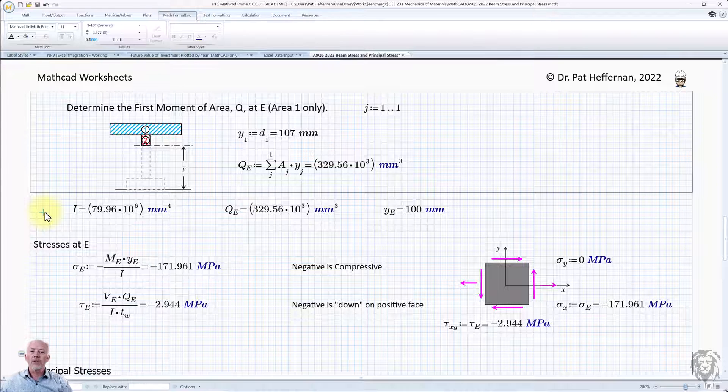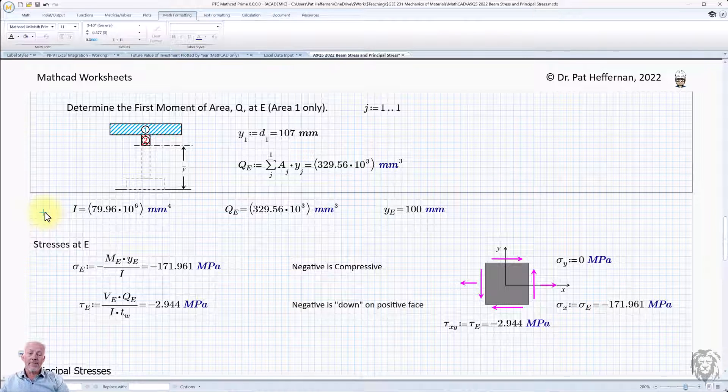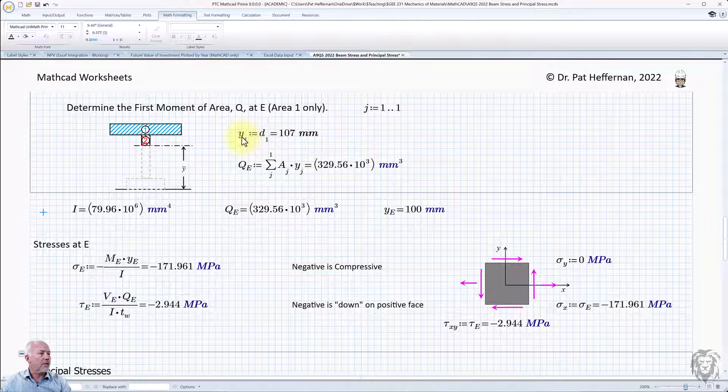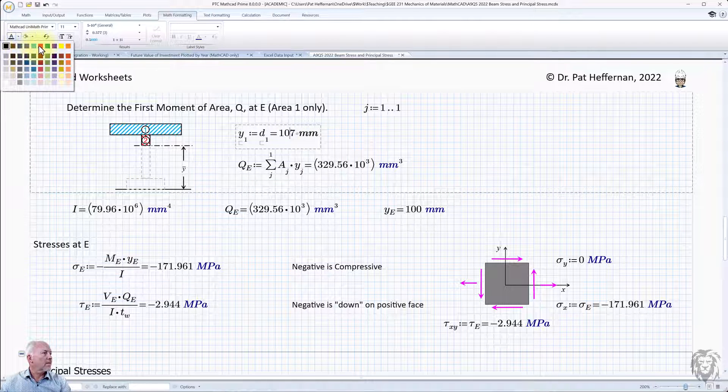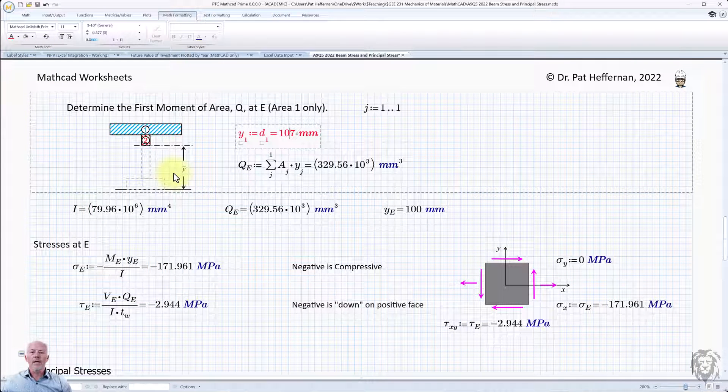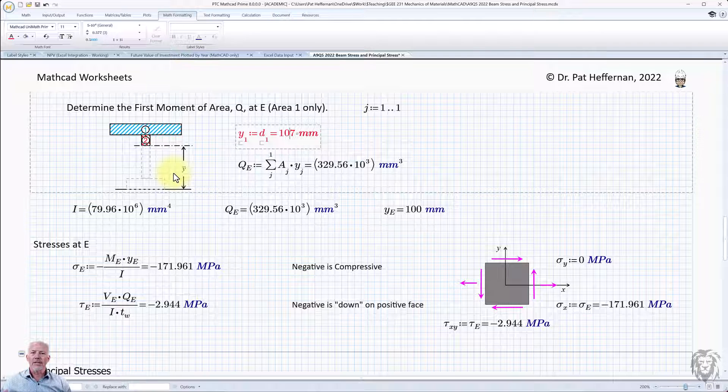And we can do that now to differentiate between a specific update to a specific expression. So, for example, if we were to go into this expression here where Y1 is equal to D1, 107 millimeters, I go in here. Now, if I change the color, it only applies to that expression. And you'll note that it also updates the variables. So it deals with it a little bit differently.